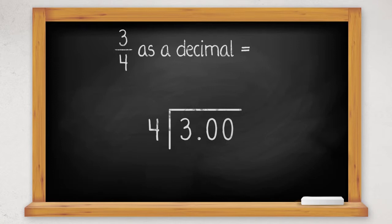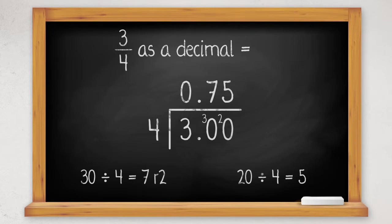Now we can do the division. 4 into 3 goes zero times, remainder 3. 4 into 30 goes seven times, remainder 2. 4 into 20 goes five times exactly. So 3 quarters as a decimal is 0.75.